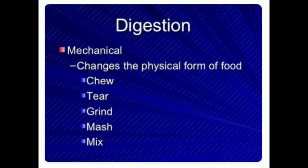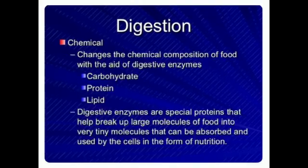There are two types of digestion. First is mechanical digestion, which changes the physical form of food — actions include chew, tear, grind, mash, and mix.